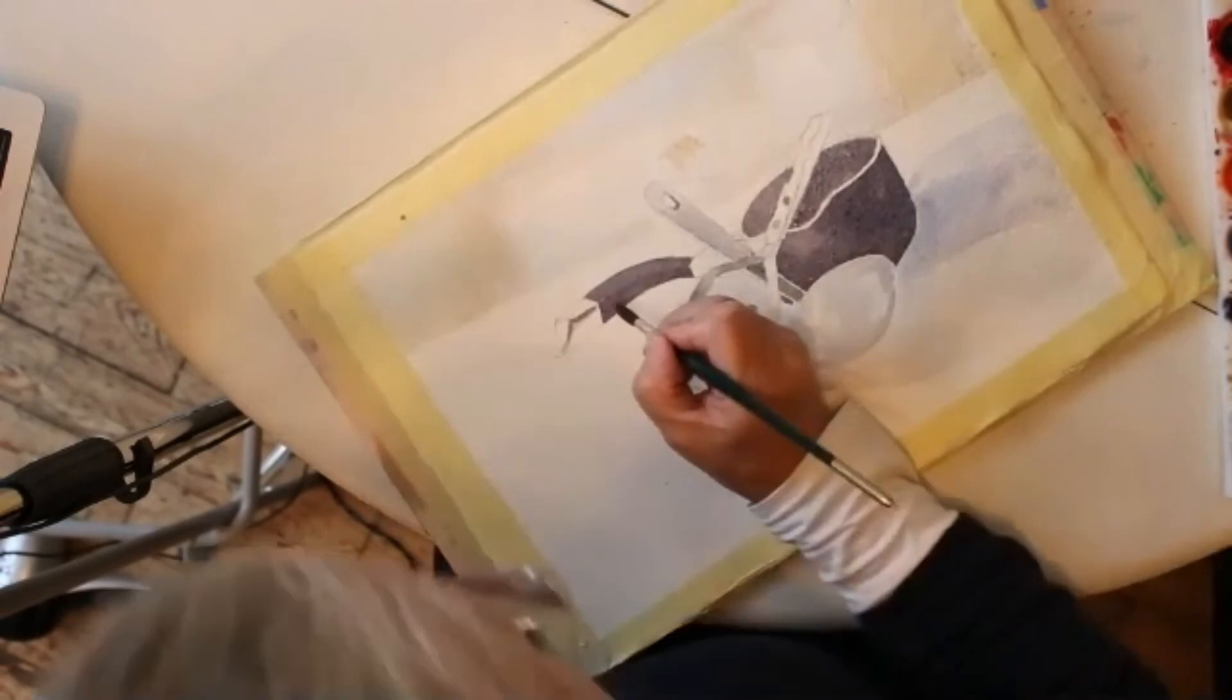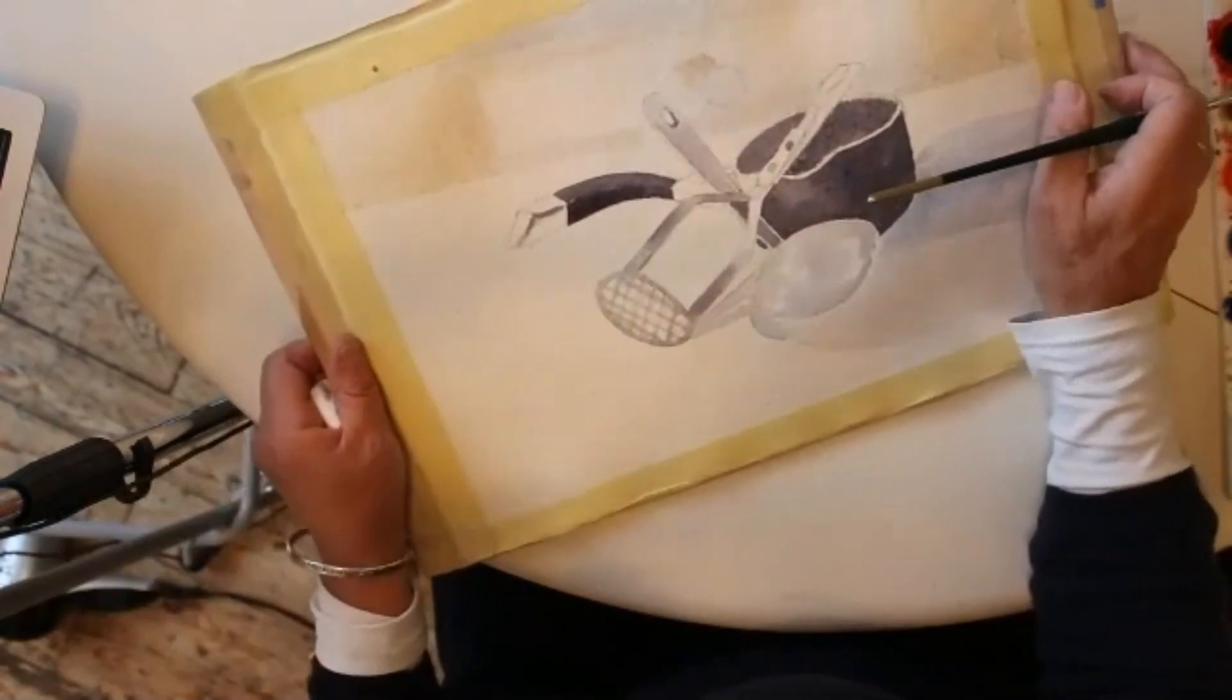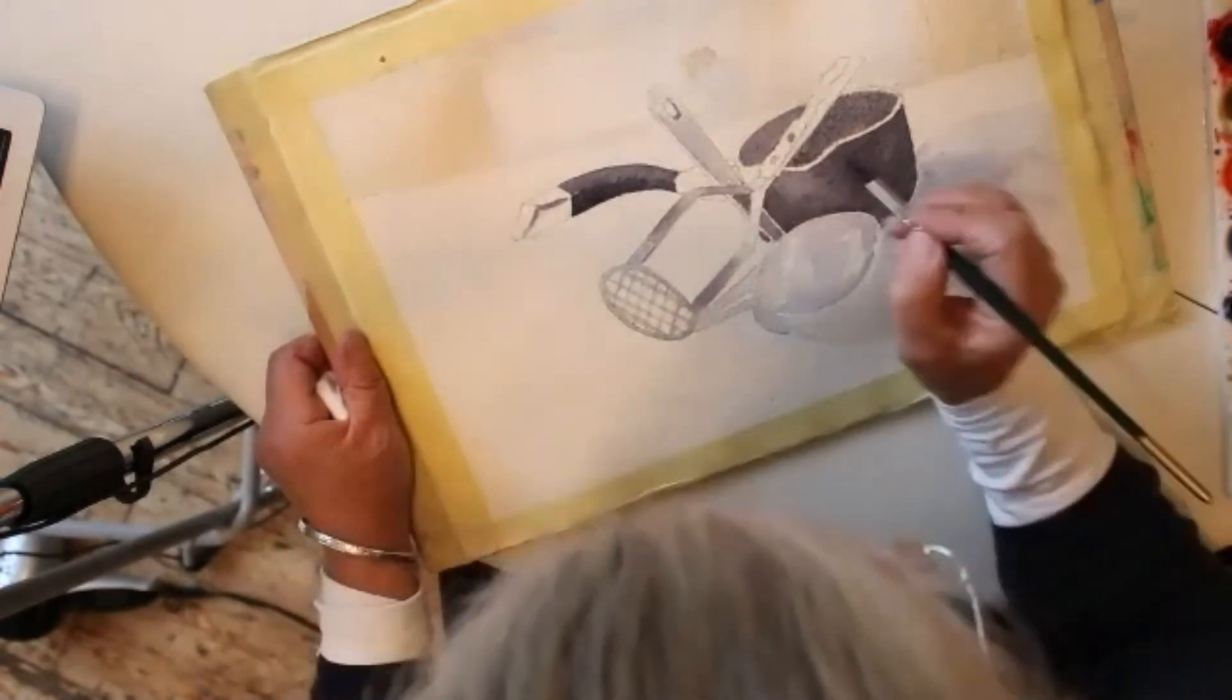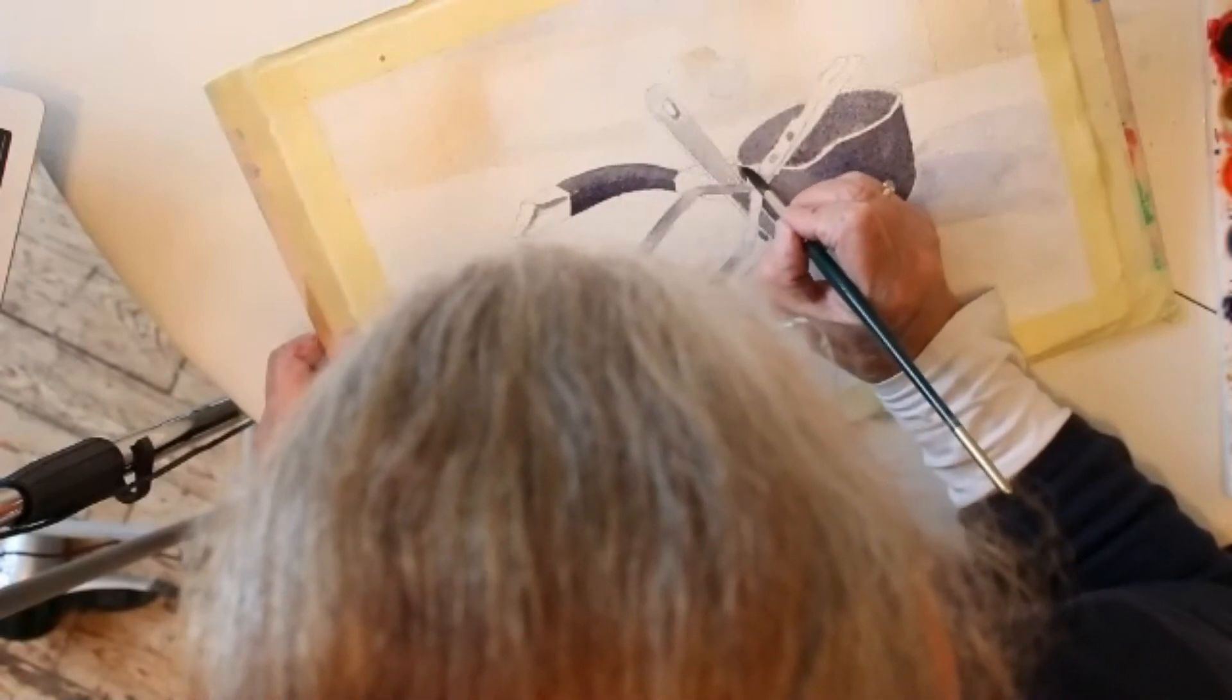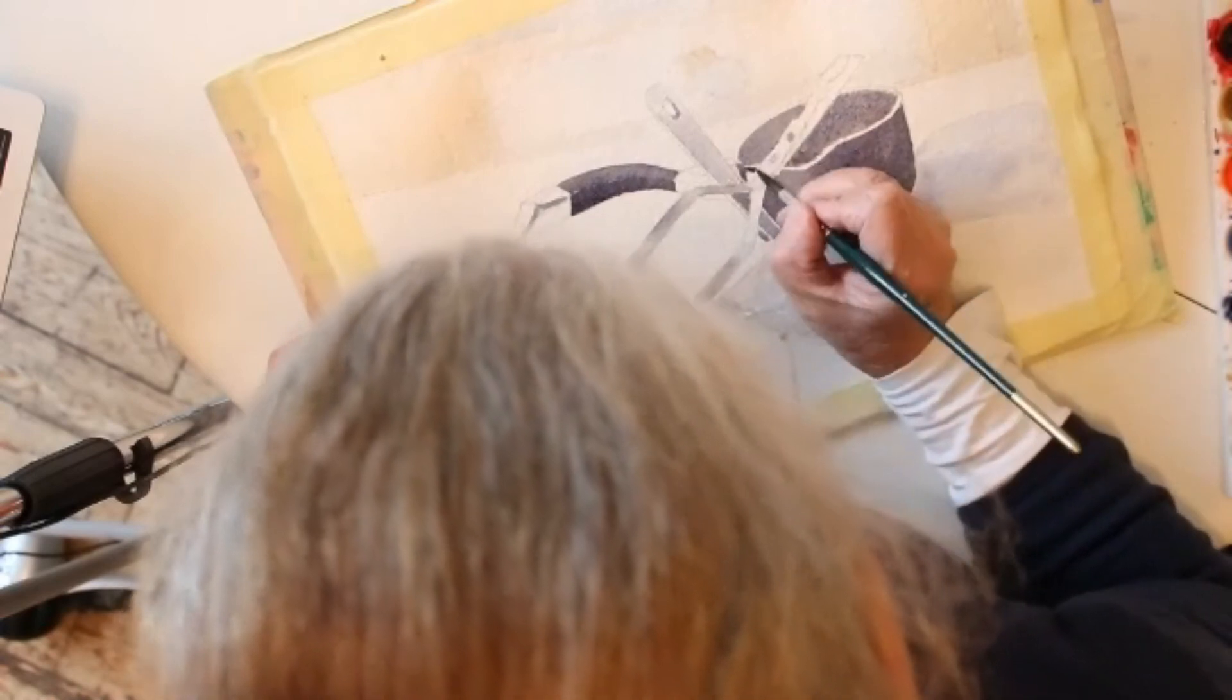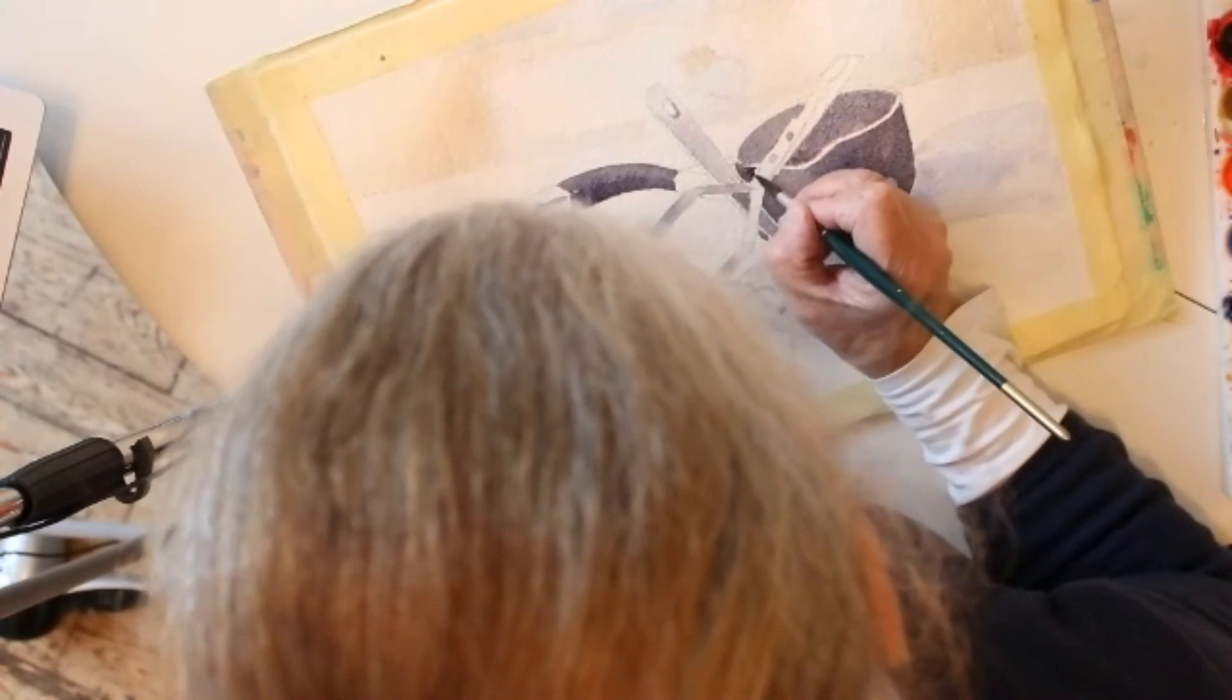I'll just put a little bit more dark down the bottom here and then keep my board at an angle so it doesn't run back out of the wedge. How you have your board is also important because you can control the flow of the color by having it either flatter or more at an angle, depending on what you're painting.